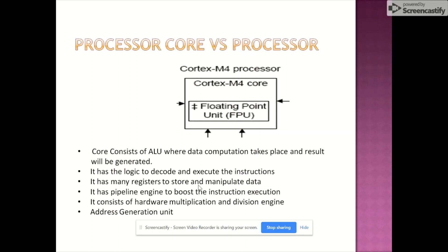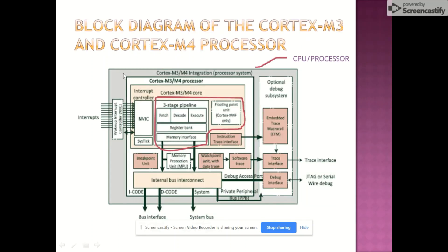All these components are actually part of the core. The processor is also referred to by the term CPU, which stands for central processing unit, and the entire block is called the CPU core. A CPU may have multiple cores — for example, the Cortex-M4 block consists of only one core. So the difference is: the processor is the processor core plus the processor-specific peripherals.